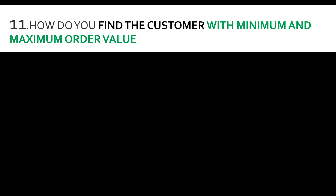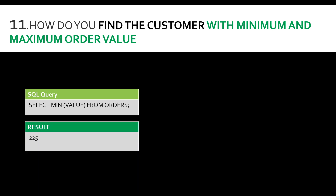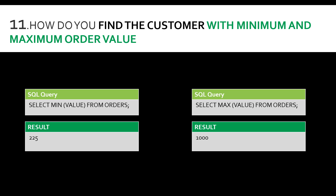The result would be 225 because that is the minimum order value in the orders table. Similarly, to find the maximum order value, the syntax is SELECT MAX(value) FROM orders, and the result would be 1000 — the highest order value placed by a customer. These are analytical queries that come in handy during the analysis phase.